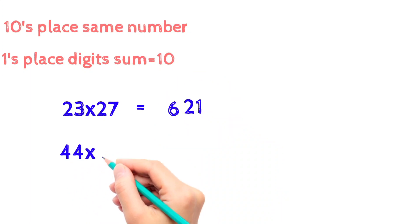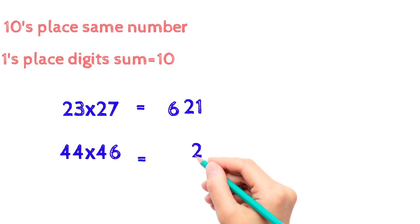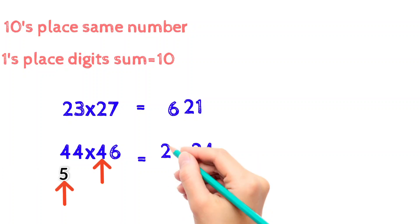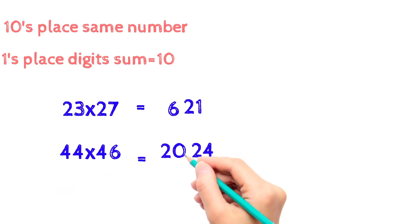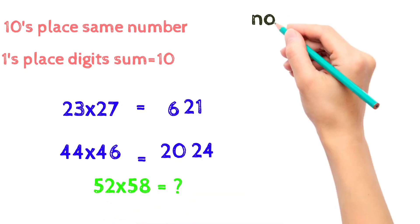Now let's try this example: 44 into 46. Multiply ones place digit 4 into 6 which is equal to 24. Add 1 to the tens place number 4 plus 1 which is equal to 5. Now multiply 5 into 4 which is equal to 20. The answer is 2024. Now try this example and comment the answer below.